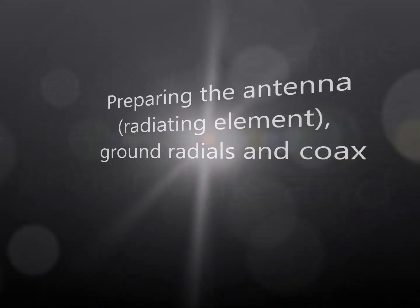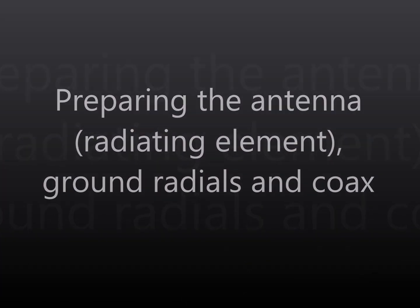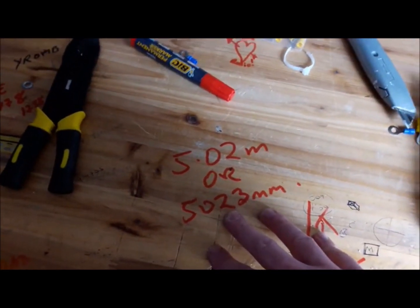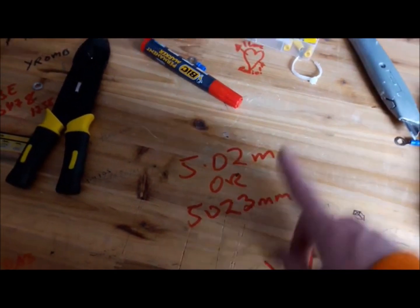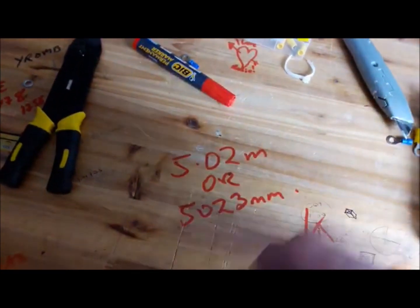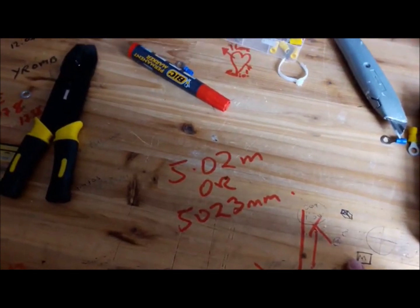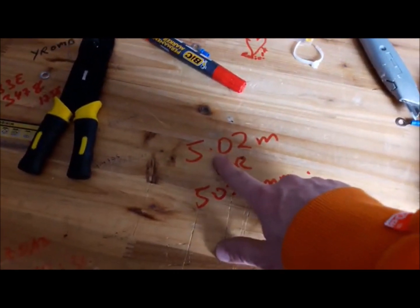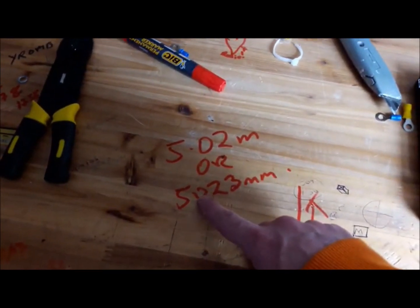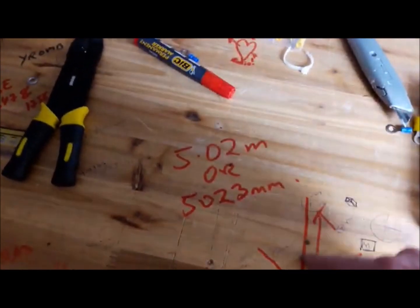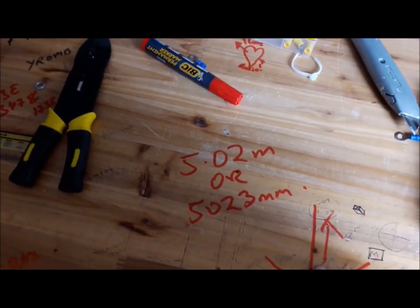So now I'm making the wire part of the antenna. That consists of the vertical element of the antenna that radiates and then the four legs of the ground plane or the four radials. The length is calculated at 5,023 millimeters or 5.02 meters.